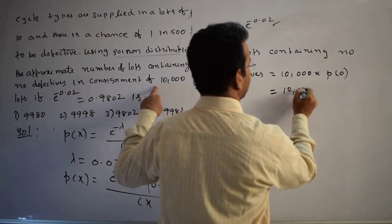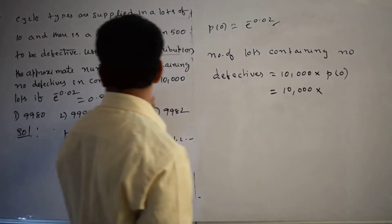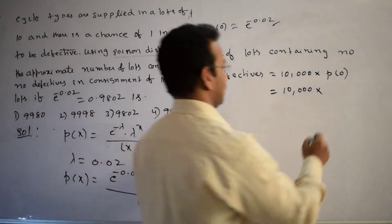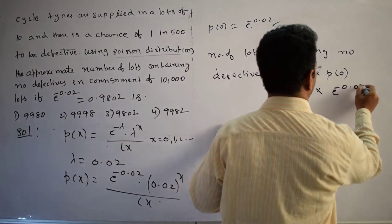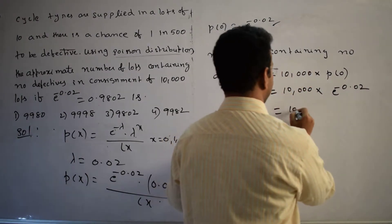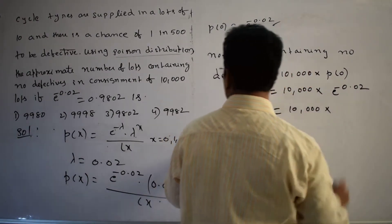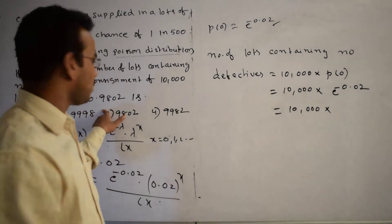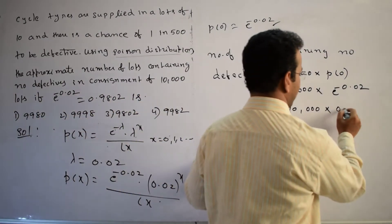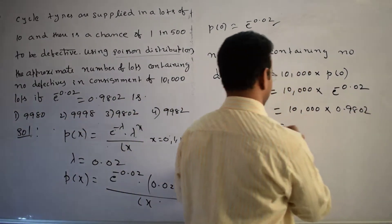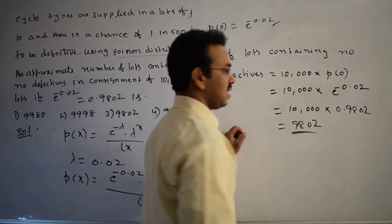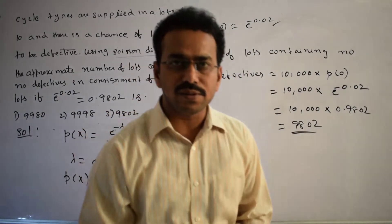Which equals 10,000 into, what is the value of P(0)? e power minus 0.02, which equals 10,000 into 0.9802, which equals 980.